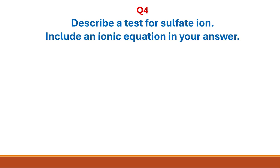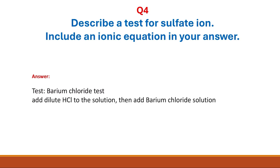Question 4: describe a test for sulfate ions and include an ionic equation in your answer. The test is the barium chloride test. We add dilute hydrochloric acid to the solution and then add barium chloride solution. The result is the formation of a white precipitate of barium sulfate.